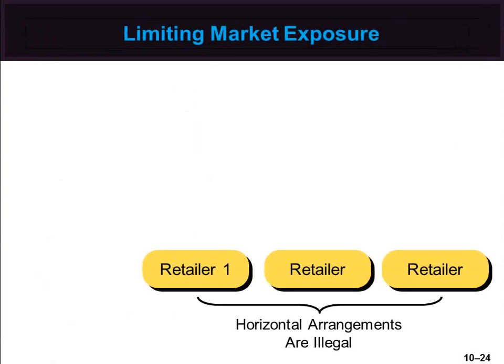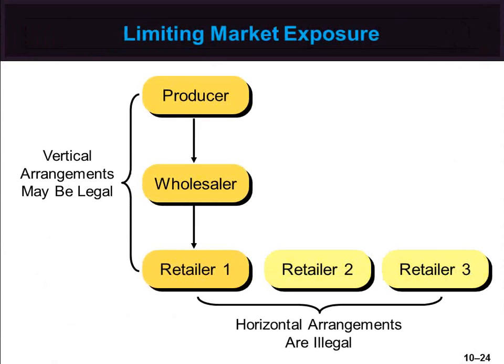Exclusive distribution is an area considered under U.S. anti-monopoly laws. Courts currently focus on the potential harm to competition in answering the basic question: is limiting market exposure illegal? Horizontal arrangements among competitors at the same level of the channel are illegal; they are considered collusion that reduces competition and harms customers. Vertical arrangements across different levels of the channel may or may not be illegal. Courts weigh the possible good effects of these arrangements against the possible restrictions on competition. Courts should be cautious about entering into exclusive distribution arrangements, as they can force companies to change long-standing channel structures and pay large damage awards.